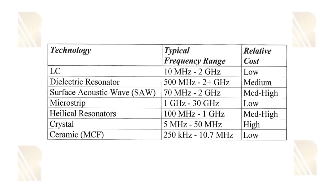Let's compare some of these technologies. For LC filters, we can have a frequency range from 10 MHz up to 2 GHz — quite a wide range — and they are low cost. Dielectric resonators are similar but operate at slightly higher frequencies.